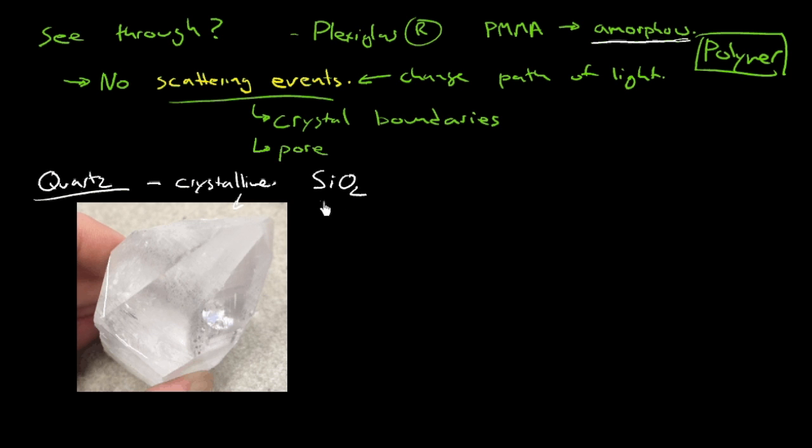And so silica is a ceramic. So what we've seen, you can certainly have a polymer, you can have a ceramic that's transparent. Now we've actually, in this example here, we've spanned either organized crystalline or not organized amorphous. So we're not really sure exactly what the story here is with optical transparency.